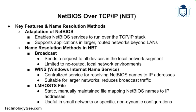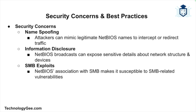In NBT, name resolution can be achieved through three methods. First, by broadcast — similar to original NetBIOS, a broadcast request is sent to resolve names, though this method is limited to the local network segment. Second, through WINS (Windows Internet Name Service), which Microsoft introduced to provide centralized name resolution — WINS servers maintain a database of NetBIOS names and their corresponding IP addresses for more efficient resolution in larger networks. Third, through the LMHosts file, a static file on each device that maps NetBIOS names to IP addresses, manually maintained and useful for small networks or specific configurations.